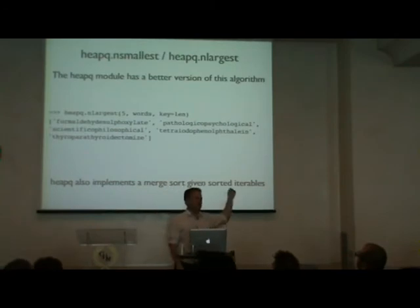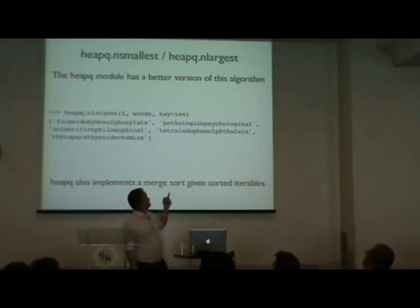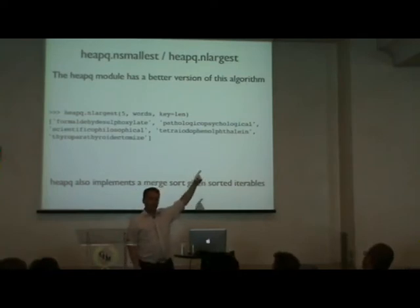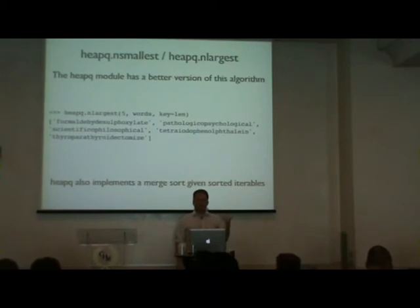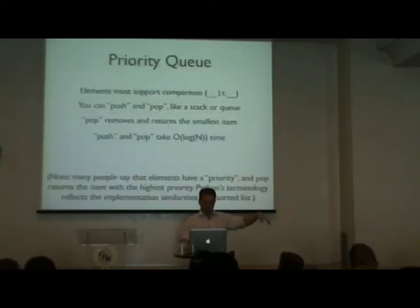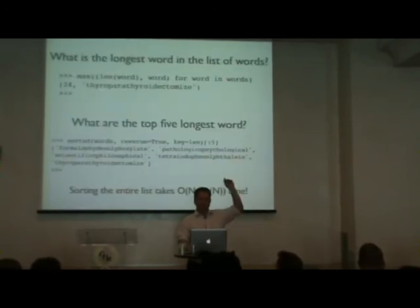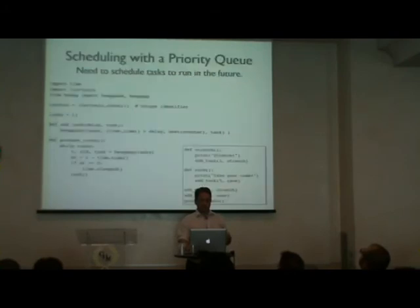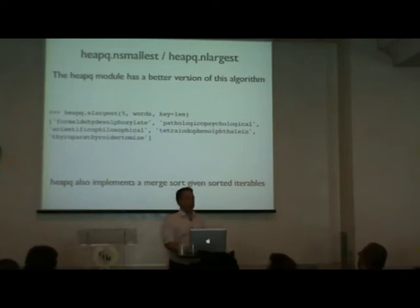You don't need to write that code yourself because heapq has nlargest() and nsmallest() built in. Given an iterable of words and a key function, nlargest(5, words, key=len) gives the five largest words by length directly. There's also a merge sort function inside heapq — take a look at the module for other useful features.